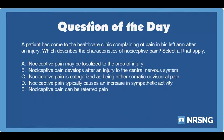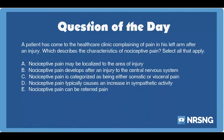A. It may be localized to the area of injury. B. It develops after an injury to the central nervous system. C. It is categorized as being either somatic or visceral pain. D. It typically causes an increase in sympathetic activity. E. It can be referred pain.